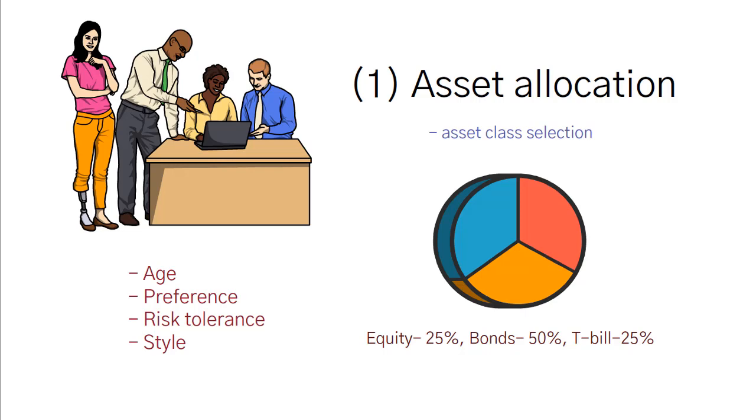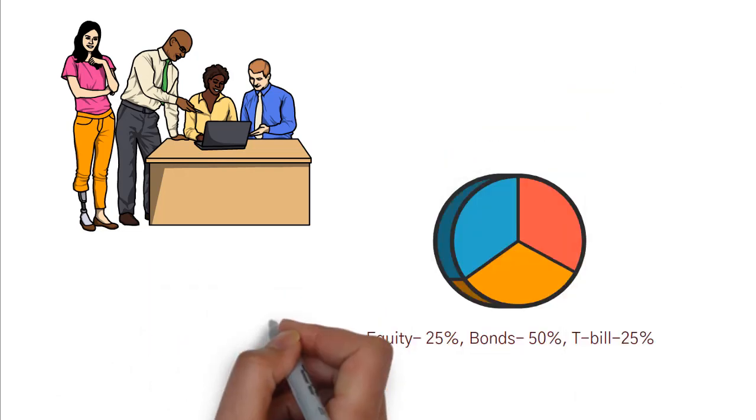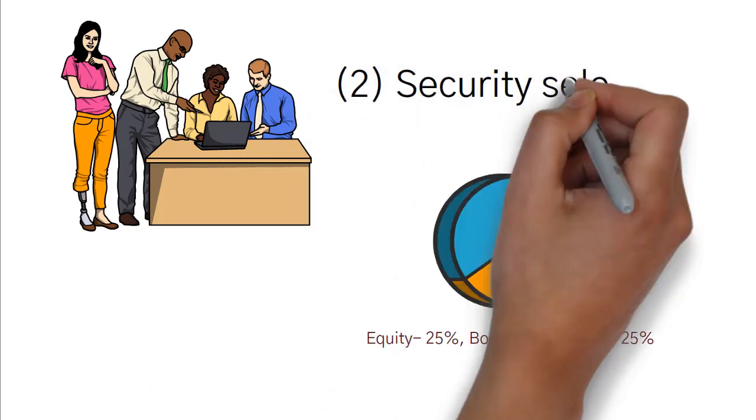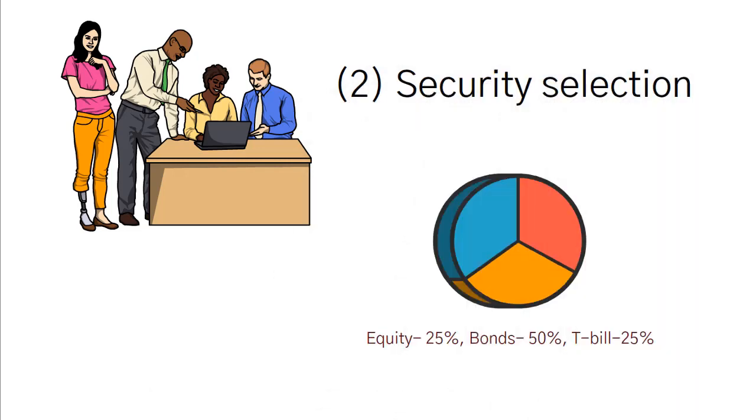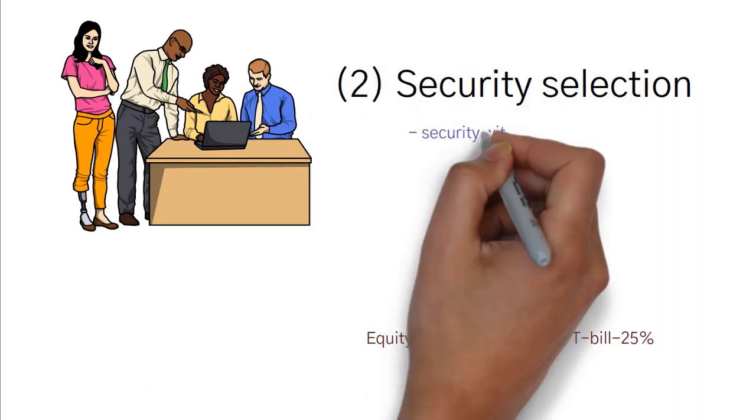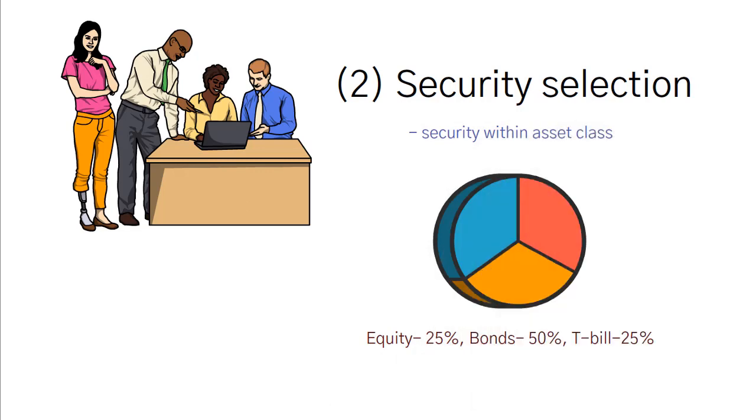The second decision is the security selection decision, which is the choice of which particular securities to hold within each asset class. In this case, you need to do a security analysis to find the security that you like.